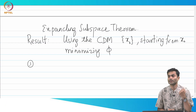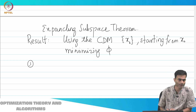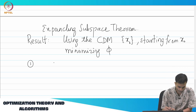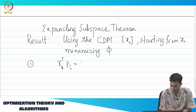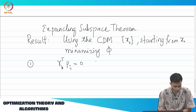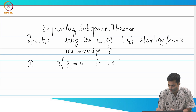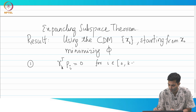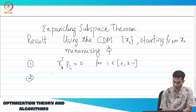There are two consequences of the expanding subspace theorem. The first is: R_k transpose P_i is equal to 0, for i belonging to 0 to k-1. Let us just note it down and then we will give some intuition to it.